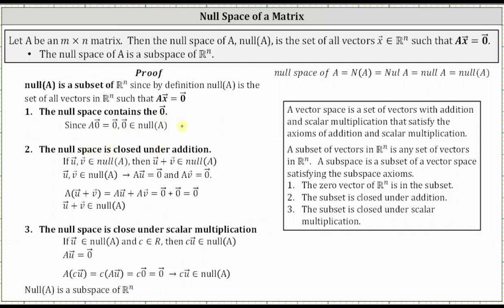Number two, let's show the null space is closed under addition, which means if vectors u and v are in the null space of A, then the sum of vectors u and v must also be in the null space of A. So if we let vectors u and v be in the null space of A, we know A times vector u equals the zero vector, and A times vector v equals the zero vector. Now, considering A times the sum of vectors u and v, this equals A times vector u plus A times vector v. Both products equal the zero vector, and the sum of two zero vectors is the zero vector, showing that u plus v is in the null space of A.